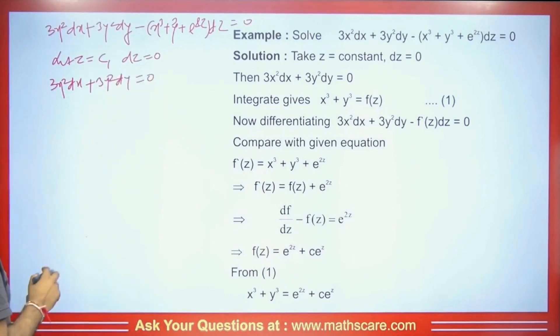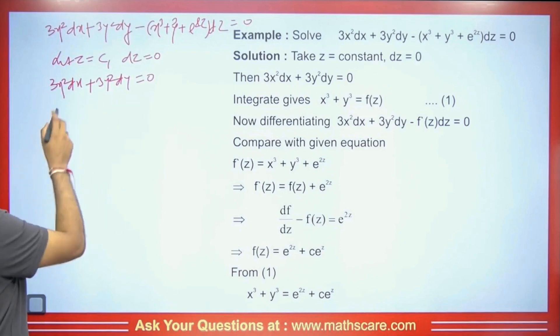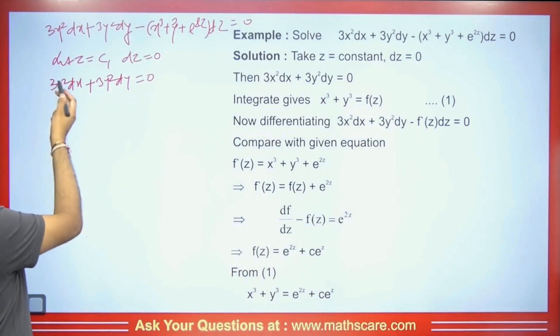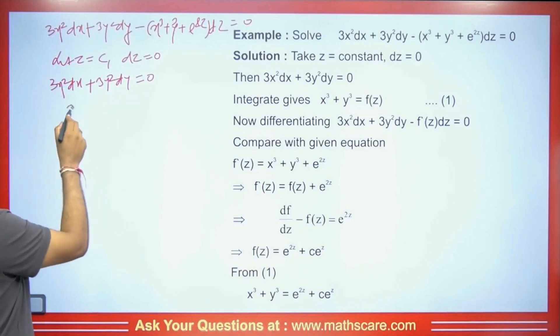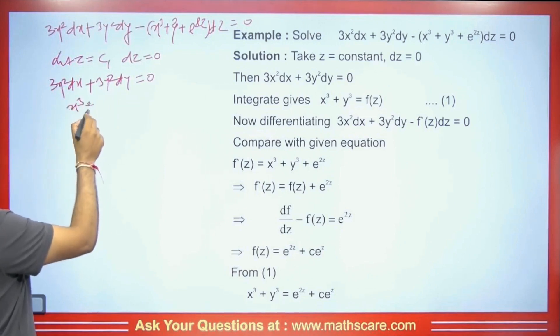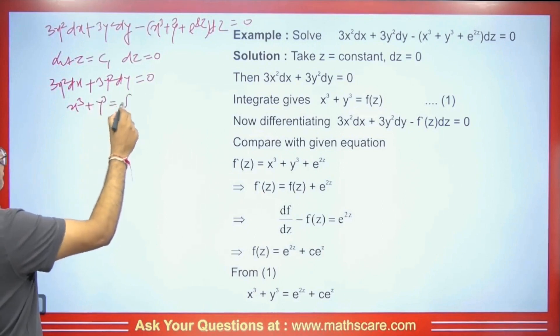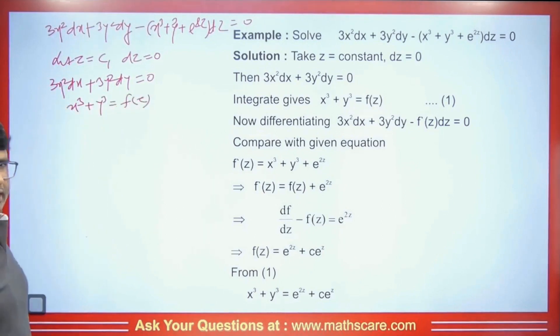Now we will integrate it. The integration gives x³/3 — the 3 cancels with 3 — and when we integrate 3y²dy, we get y³/3. We consider this as f(z), so x³ + y³ = f(z).